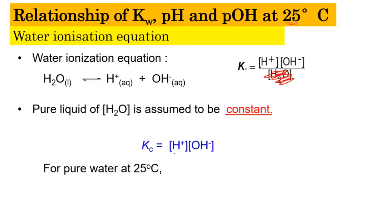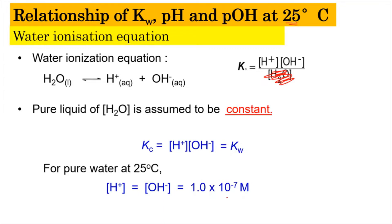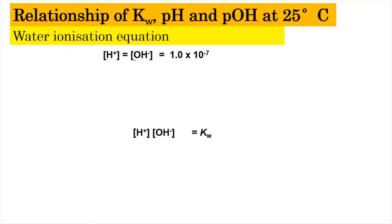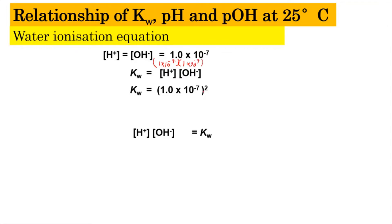So we get Kc = [H⁺][OH⁻], which for water is equivalent to Kw. At 25 degrees Celsius, the concentrations of H⁺ and OH⁻ are each fixed at 1.0 × 10⁻⁷ mol/L. Substituting into the Kw expression: Kw = (1.0 × 10⁻⁷) × (1.0 × 10⁻⁷), which gives us (1.0 × 10⁻⁷)².